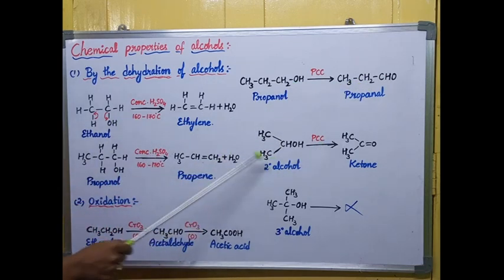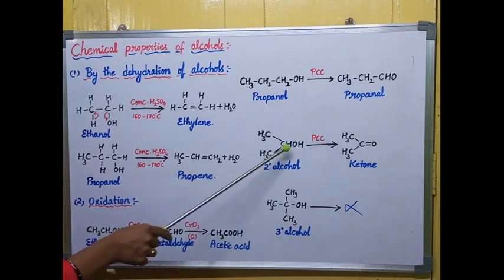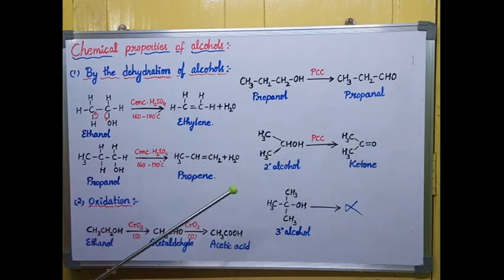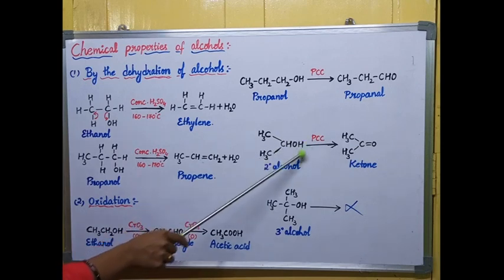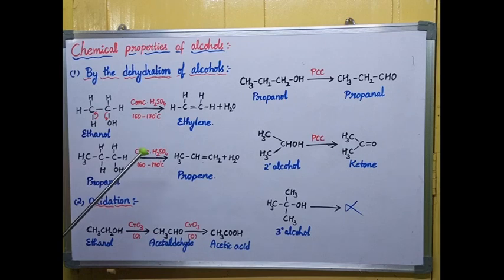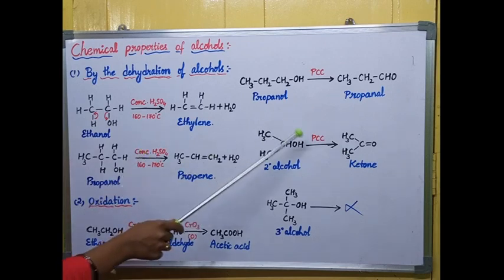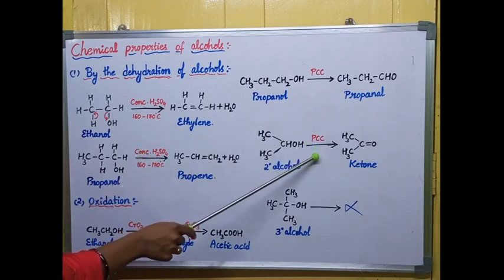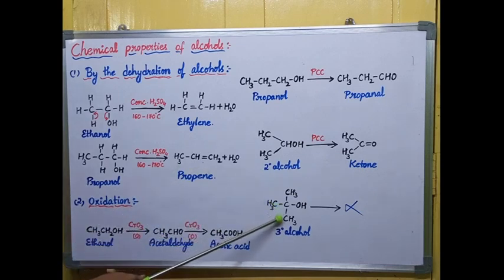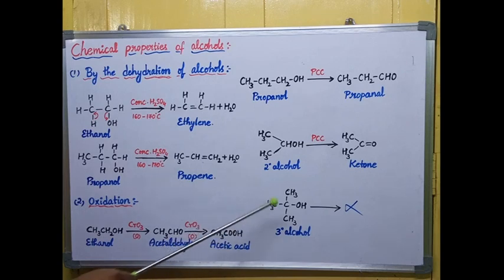Secondary alcohols in the presence of pyridinium chlorochromate convert into ketones — here also hydrogen removal takes place, so we call this process oxidation. Secondary alcohols are thus oxidized to ketones.